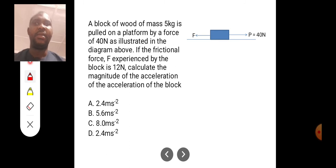We'll move to the next question. A block of wood of mass 5 kilogram is pulled on a platform by a force of 40 N, as illustrated in the diagram above. If the frictional force F experienced by the block is 12 N, calculate the magnitude of acceleration of the block.